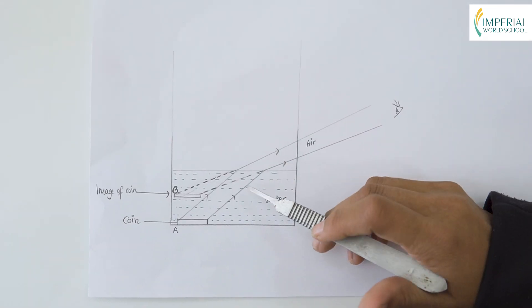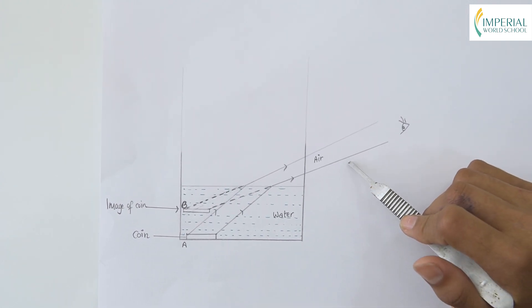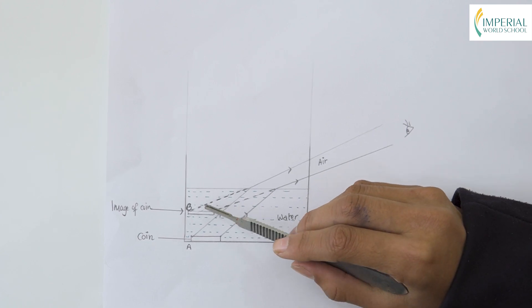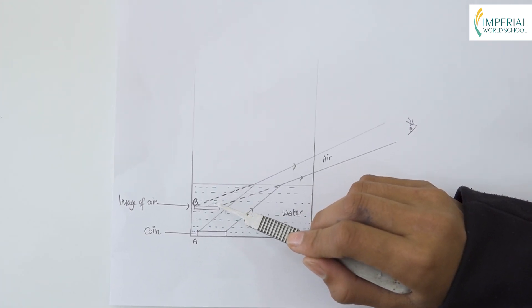Rays of light coming from the coin when immersed in water gets refracted when there is the change of medium. This, when it is retraced back, it forms an image at point B, which we observe when the paper cup is pushed back.